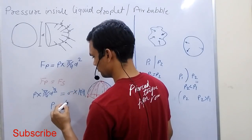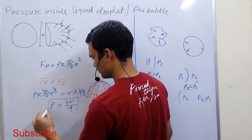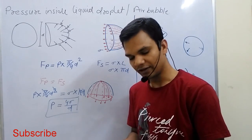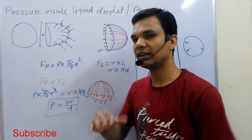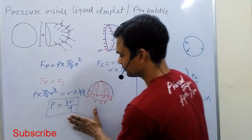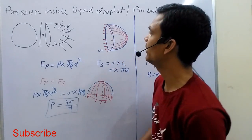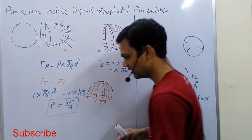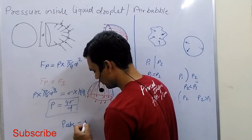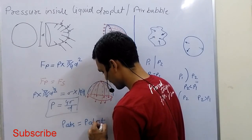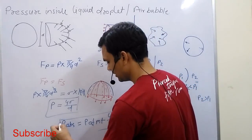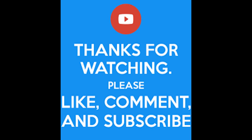So the pressure is equal to 4 sigma divided by D. This is the formula for pressure inside a liquid droplet, because in a liquid droplet one side is air and the other side is water. This pressure is above the atmospheric pressure. If we have to calculate the absolute pressure, then the formula includes the atmospheric pressure added to 4 sigma over D. This is the formula for absolute pressure.